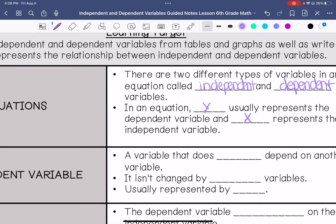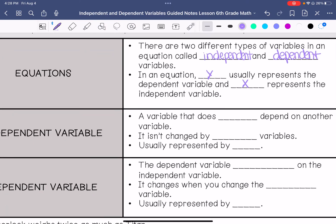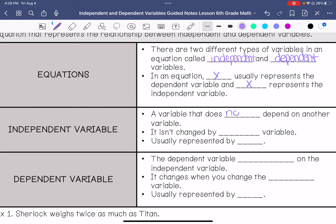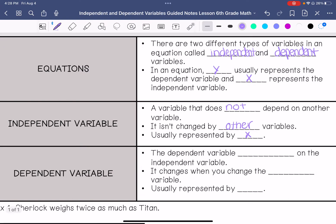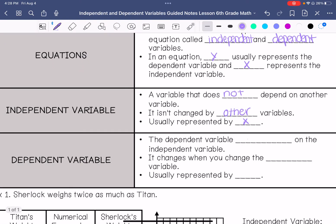An independent variable does not depend on another variable. It isn't changed by other variables and it's represented by x. The dependent variable depends on the independent variable. It changes when you change the independent variable and it is represented by the letter y.